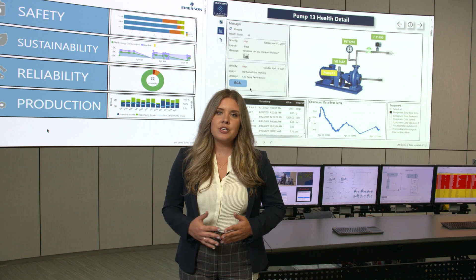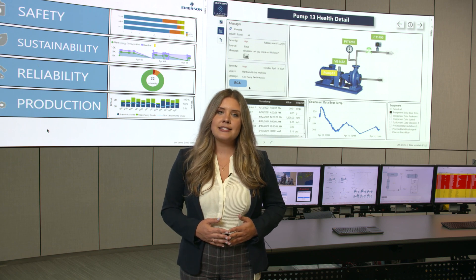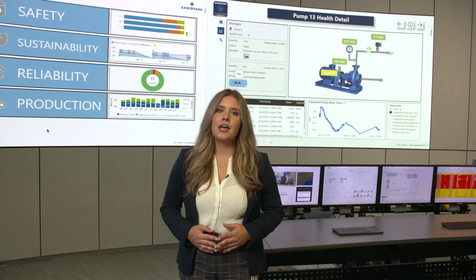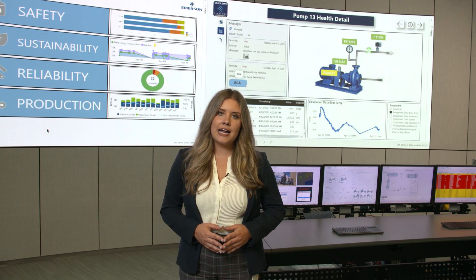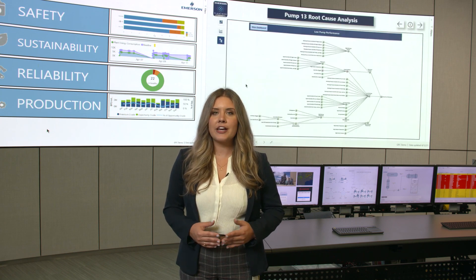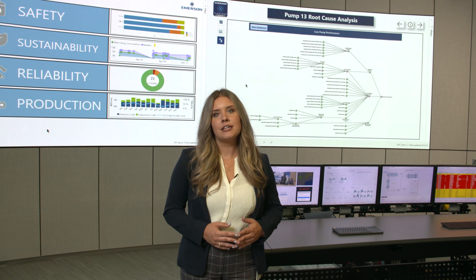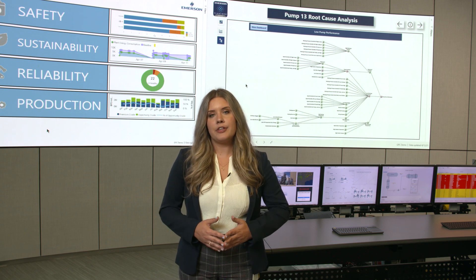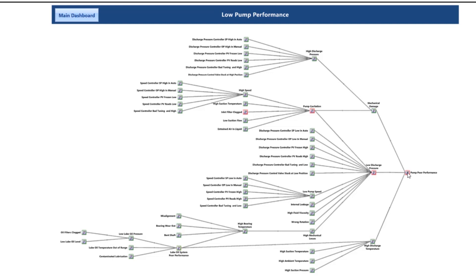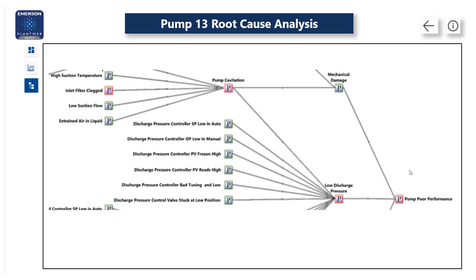All of that goes into the alert from PlantWeb Optics Analytics that's telling me this pump has low pump performance. I can also see that there's a root cause analysis available for this. If I click into that, I can get some more details and see why this pump is unhealthy. There are hundreds of different reasons that a pump might fail, so it's critical to understand why this specific pump is failing right now. Looking into the specific problems that are active on this pump, I can see that the low pump performance traces back to the root cause, which happens to be a clogged inlet filter.